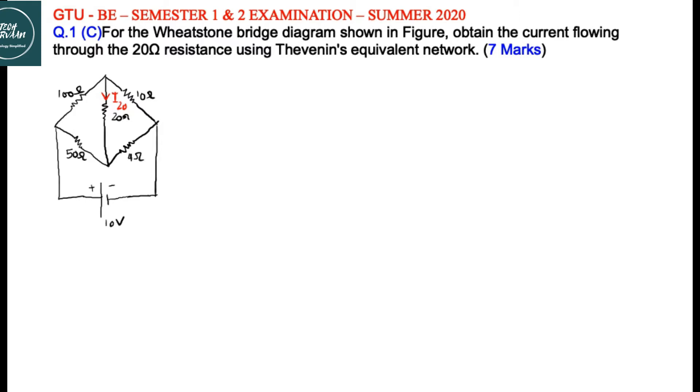We will name these Wheatstone Bridge junctions like this: A, B, C, and D. Our step number 1 would be to find VTH, that is Thevenin's Equivalent Voltage. You can write it as VOC, open circuit voltage at terminals B and D. To find VTH, we will redraw this diagram. It would be like this.